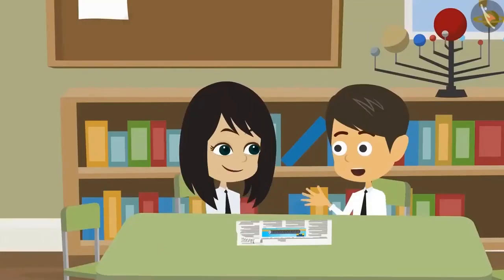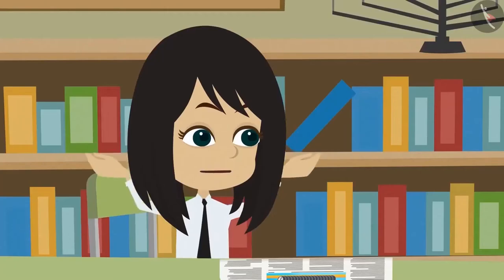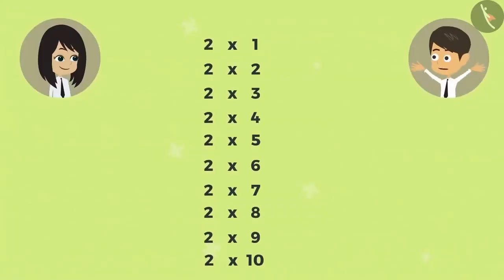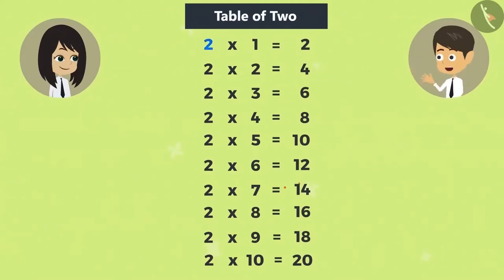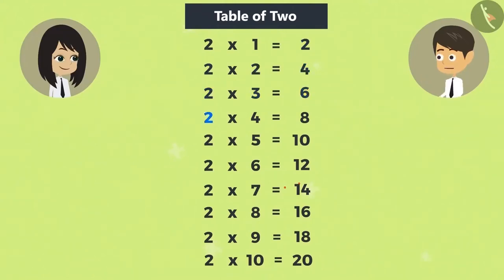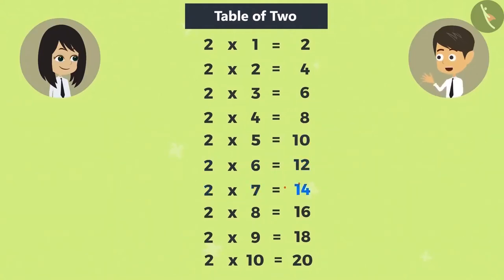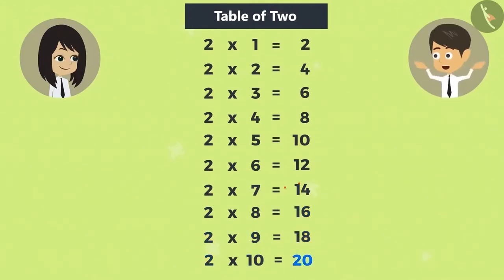What is a multiplication table? The list obtained when multiplying a number with 1 to 10 is called the multiplication table of that number. Like a multiplication table of 2 is: 2×1 is 2, 2×2 is 4, 2×3 is 6, 2×4 is 8, 2×5 is 10, 2×6 is 12, 2×7 is 14, 2×8 is 16, 2×9 is 18, 2×10 is 20.